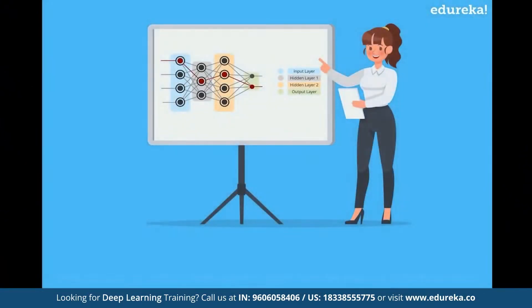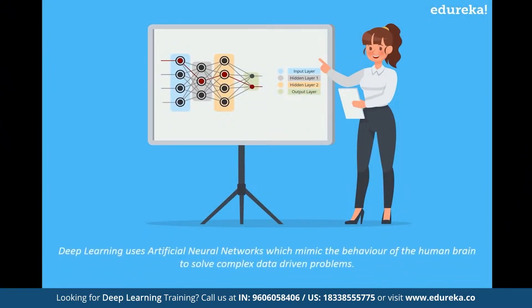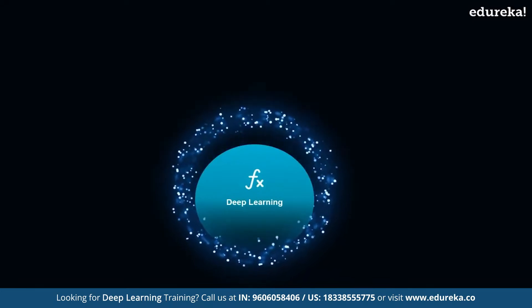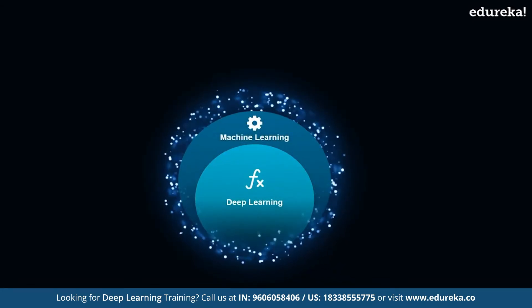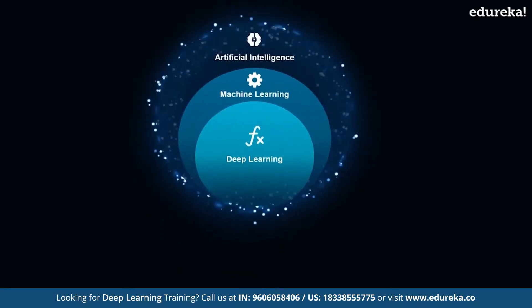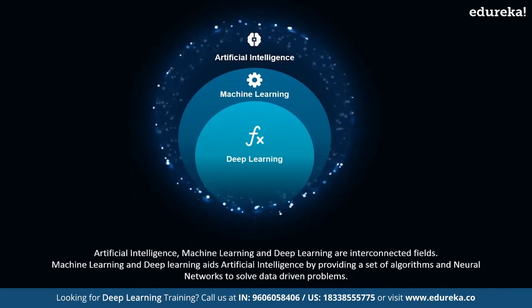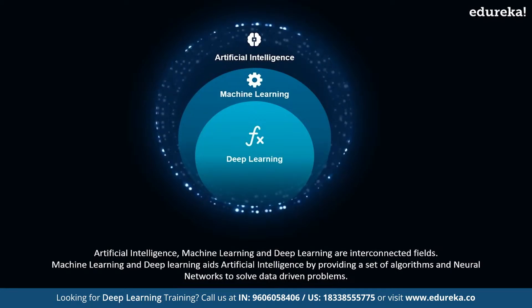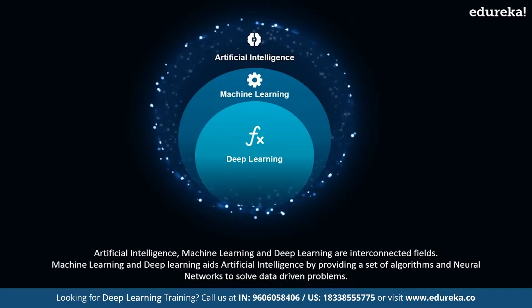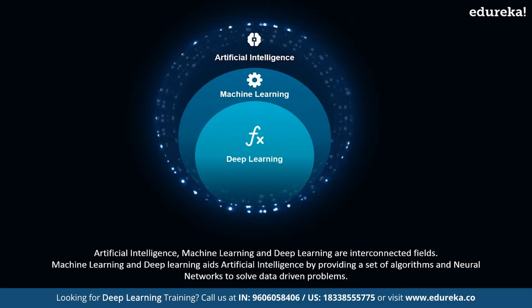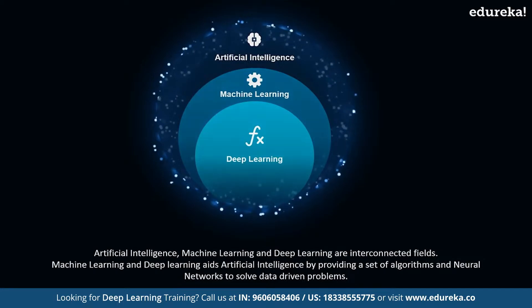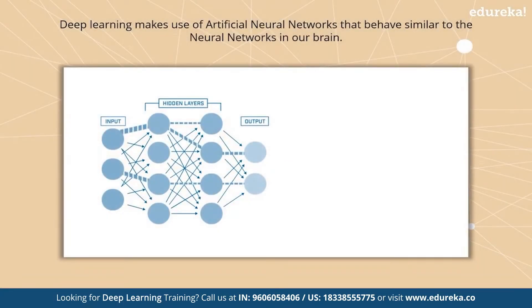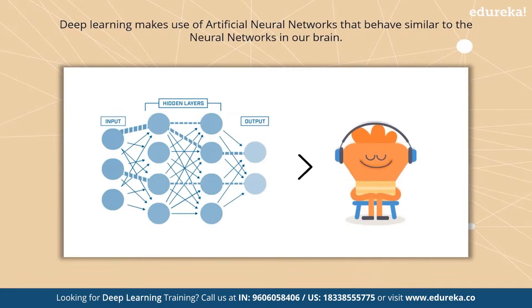An artificial neural network is the functional unit of deep learning. Deep learning uses artificial neural networks which mimic the behavior of the human brain to solve complex data-driven problems. Deep learning is a part of machine learning, which falls under the larger umbrella of artificial intelligence. These are interconnected fields where machine learning and deep learning aid artificial intelligence by providing a set of algorithms and neural networks to solve data-driven problems.